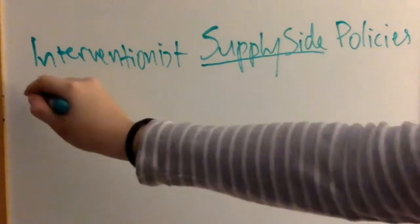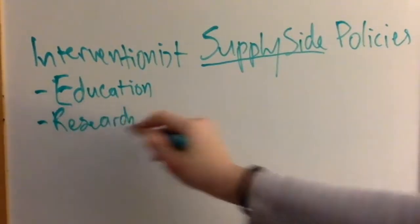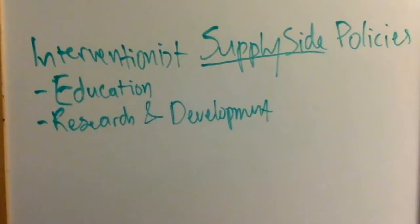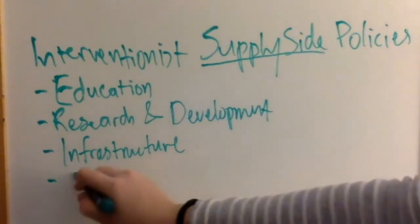Let's go to the interventionist solutions first. Number one: education. Government investment in education will increase the quality of labor, and thus increase the long-run aggregate supply. Number two: research and development. Government subsidies to R&D can lead to the development of new products or more efficient technology, causing the long-run aggregate supply to shift outward. Number three: infrastructure. Government investments in large-scale capital such as roads, water supply, or electricity increases the productivity and efficiency of firms, which increases the productive capacity, so long-run aggregate supply shifts out.